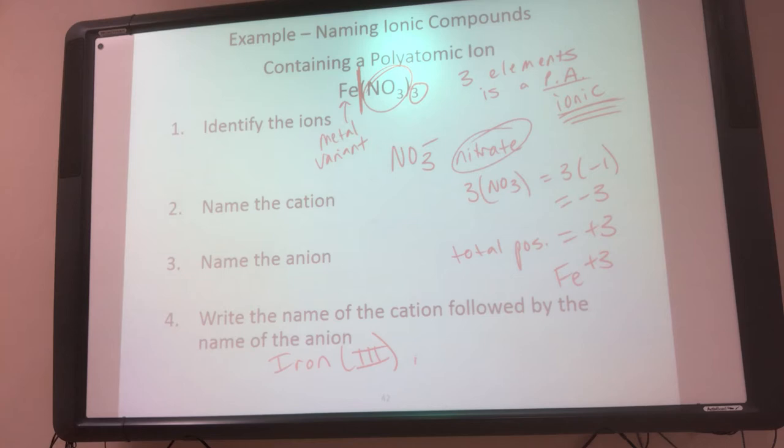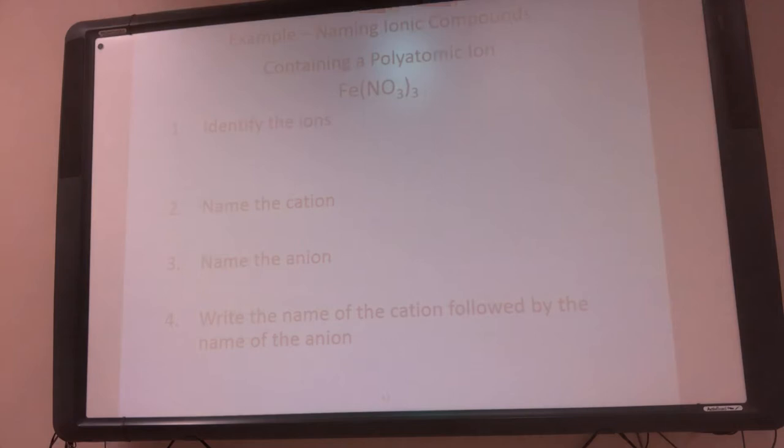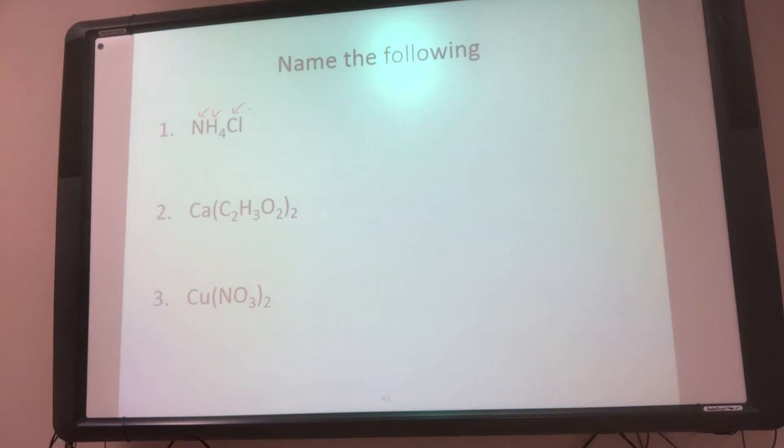The polyatomic ion is just named by its name, so the full name is iron three nitrate. It's important to get the spelling right — that's how you do the name. Now let's do the next one. I look and I see one, two, three elements, so there are three elements and I need to think about whether there's a polyatomic ion.